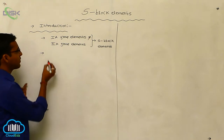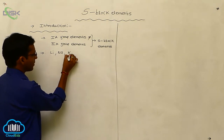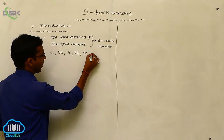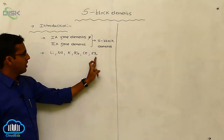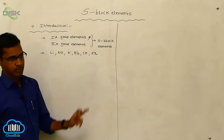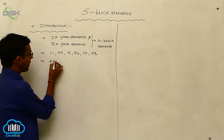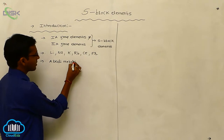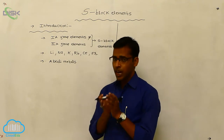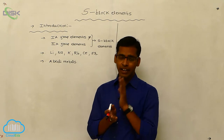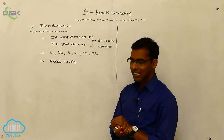The first A-group elements are lithium, sodium, potassium, rubidium, cesium, and francium. These are called alkali metals. They are called alkali metals because when dissolved in water, they produce strong hydroxides.